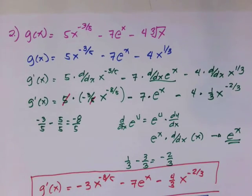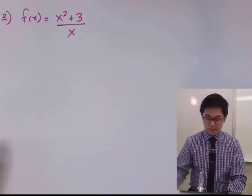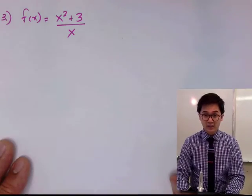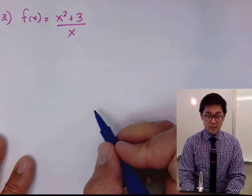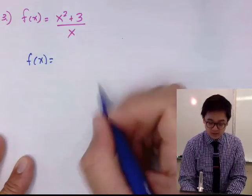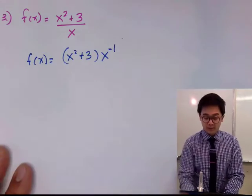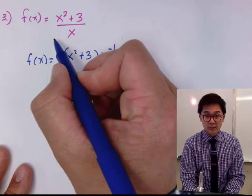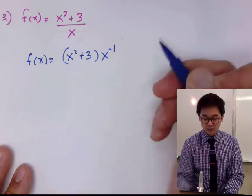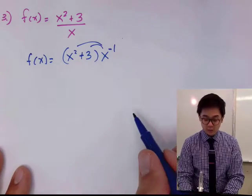Now let's find the derivative of example number 3: f(x) equals x squared plus 3, all over x. We're still using the power rule, so we modify the fraction. We rewrite it by multiplying by x to the negative 1, since x in the denominator becomes x to the negative 1 by the law of exponents.